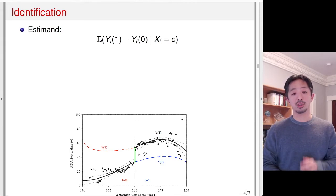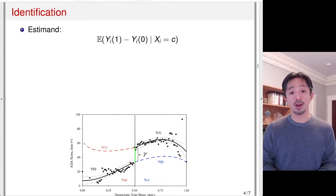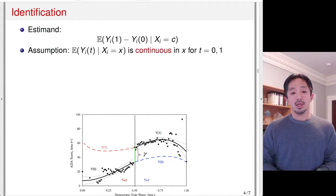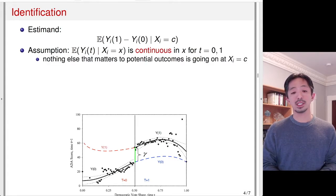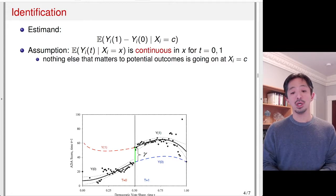What is the assumption required to identify this quantity? The key assumption is that the conditional expectation of the potential outcome Y(t) is continuous in the forcing variable X for both t equals 0 and t equals 1. Intuitively, what this means is that nothing else that matters to the potential outcomes is going on at X_i equals C. So at the threshold, there is no gap in the conditional expectation line of Y(1) as well as Y(0).